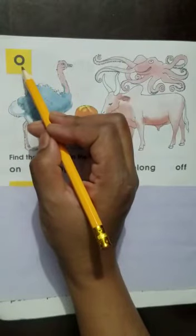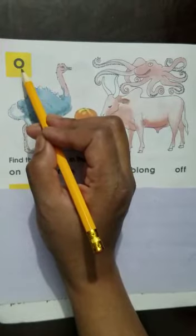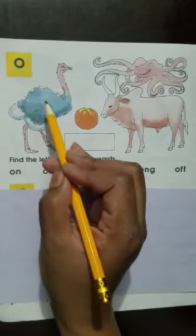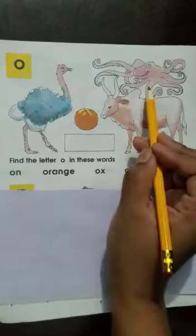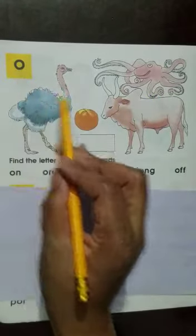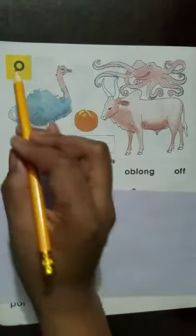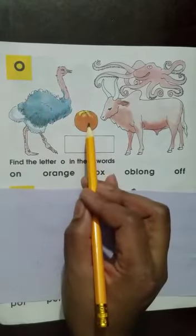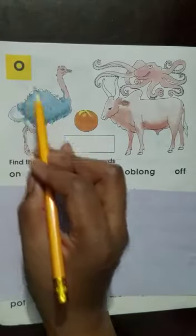O. Oscar Orange says O. O, ostrich. Ostrich. O, octopus. Octopus. O, ox. Orange. O, orange. O, oblong. O, oblong.